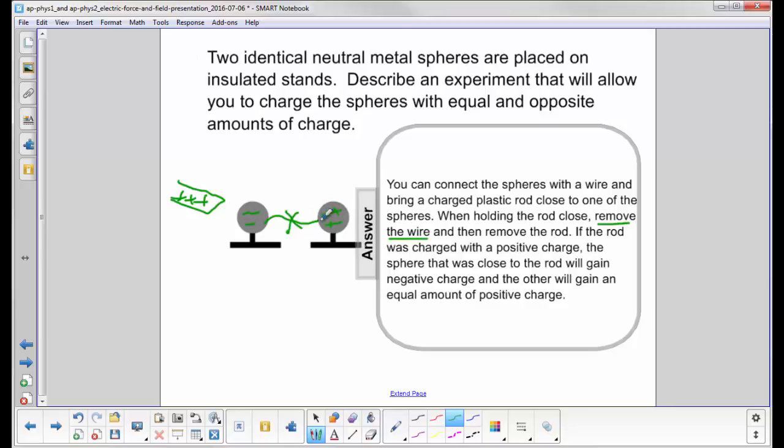Now these charges can go nowhere. This is insulated. The air is insulated. I remove the rod, and I've left behind, in this case, three negative charges, three positive, so they have equal and opposite charge.